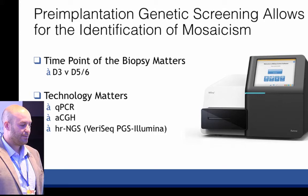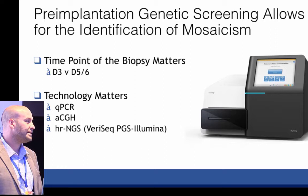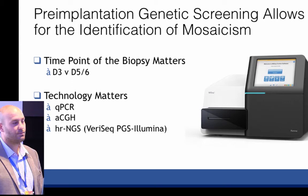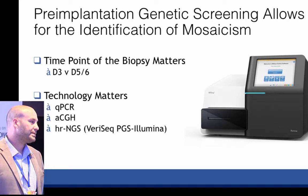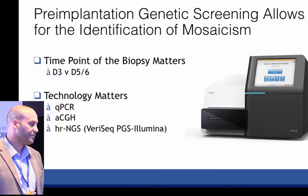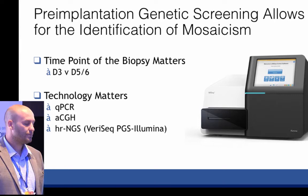Looking at the technology and how we are defining mosaicism now, there are a few things that really matter. First is the time point of the biopsy. At day three, most people take one blastomere, and you can't detect mosaicism in a single blastomere because you only have one set of chromosomes. You would have to take a second blastomere and see a different result to suggest two distinct cell populations in that embryo. At day five or day six, when you take a blastocyst biopsy, if done properly, you end up with a number of cells, and from there you can actually see two distinct cell populations within a single biopsy of tissue.